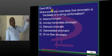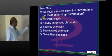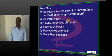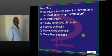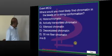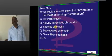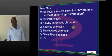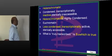In what situation will you most likely see chromatin in the beads-on-a-string conformation? The actively transcribed chromatin is the one in the form of a beads-on-a-string, or nucleosomal pattern — that is what you have to basically appreciate.